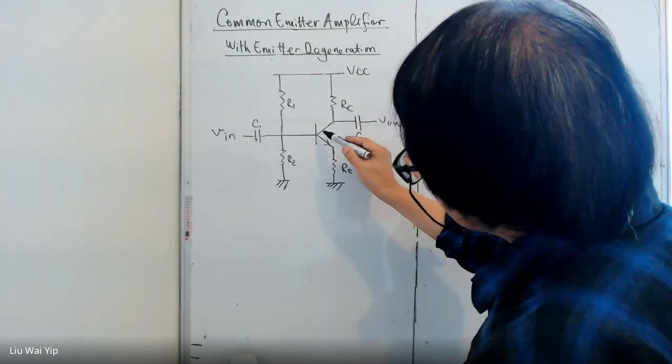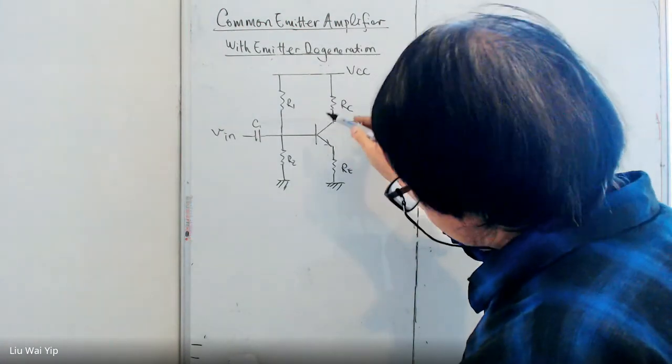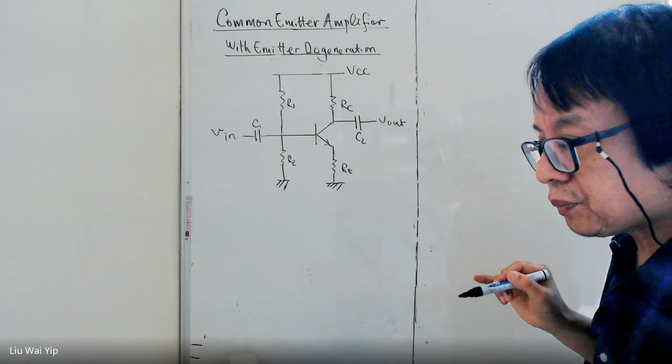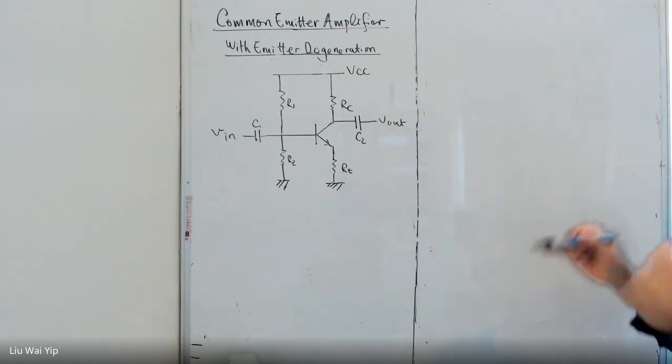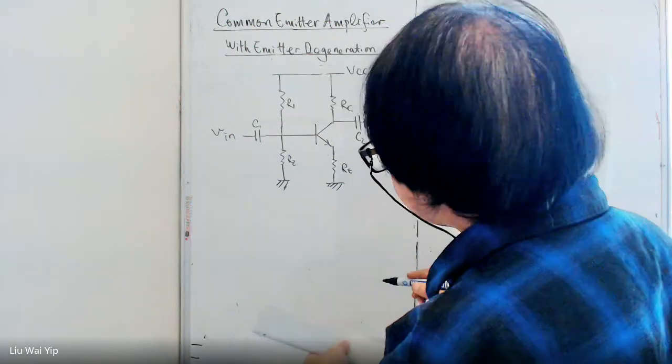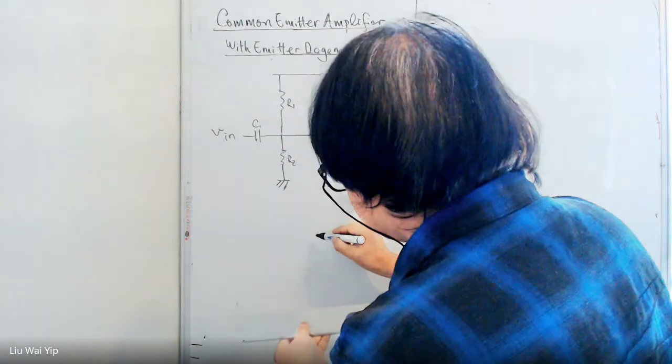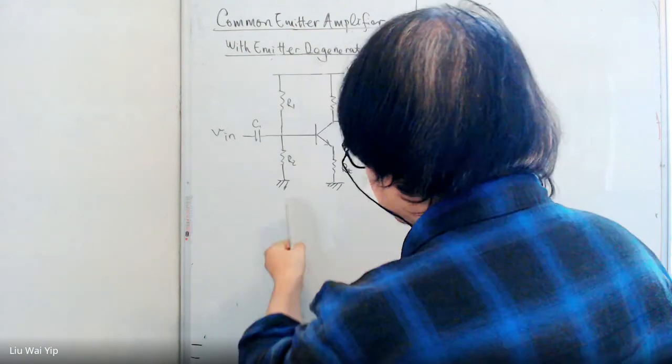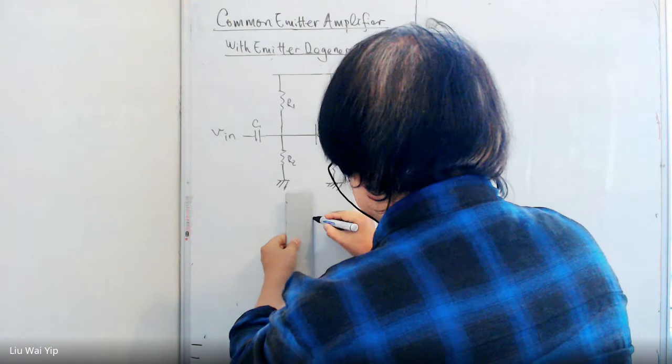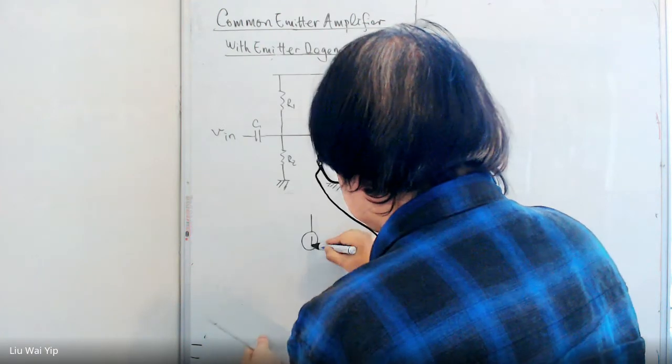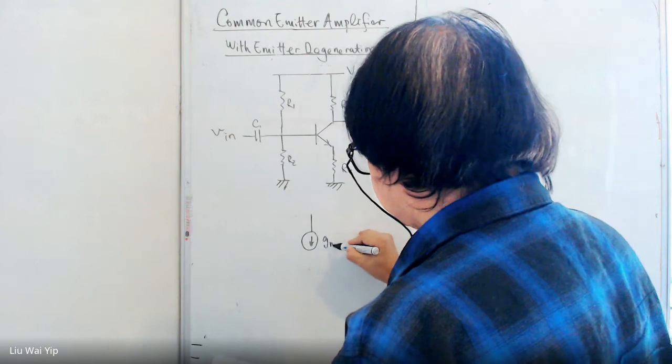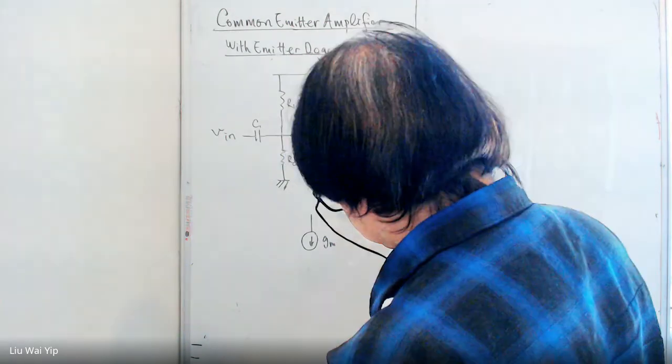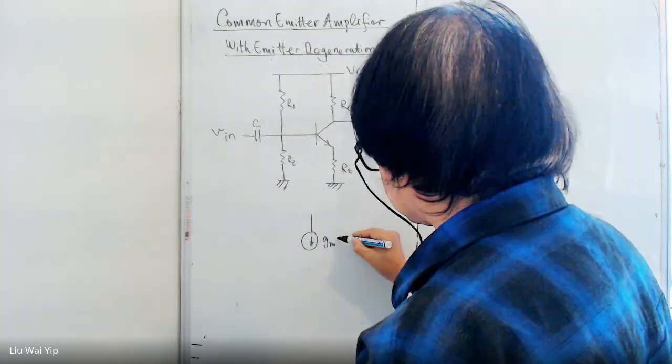The first thing that we need to do is to replace the transistor with the T model. Let's remember what the T model looks like. It is a T model. We need to replace the T model. So, let's do it. T model.